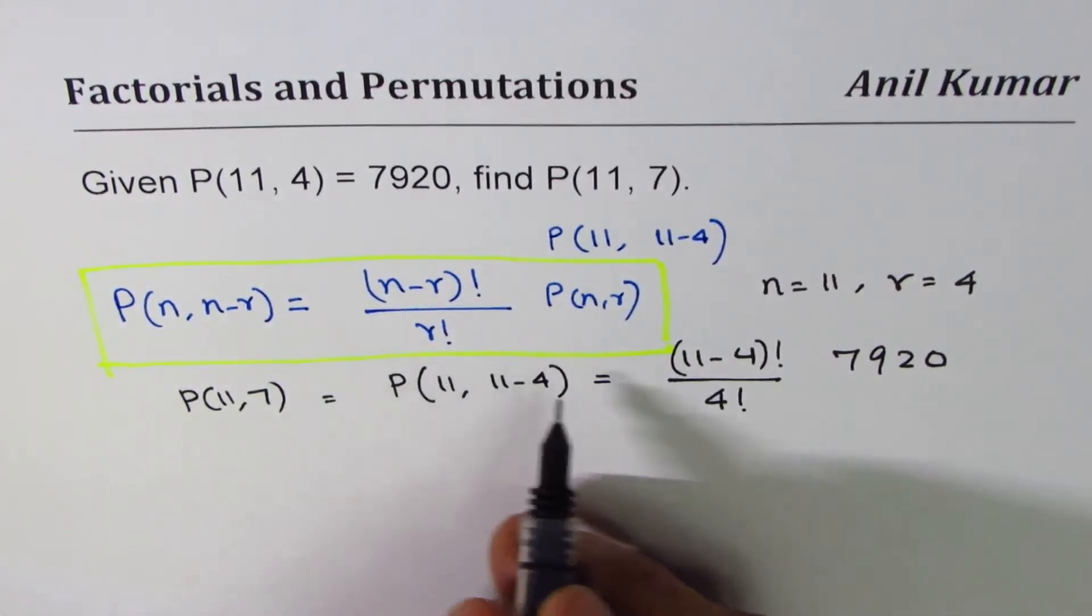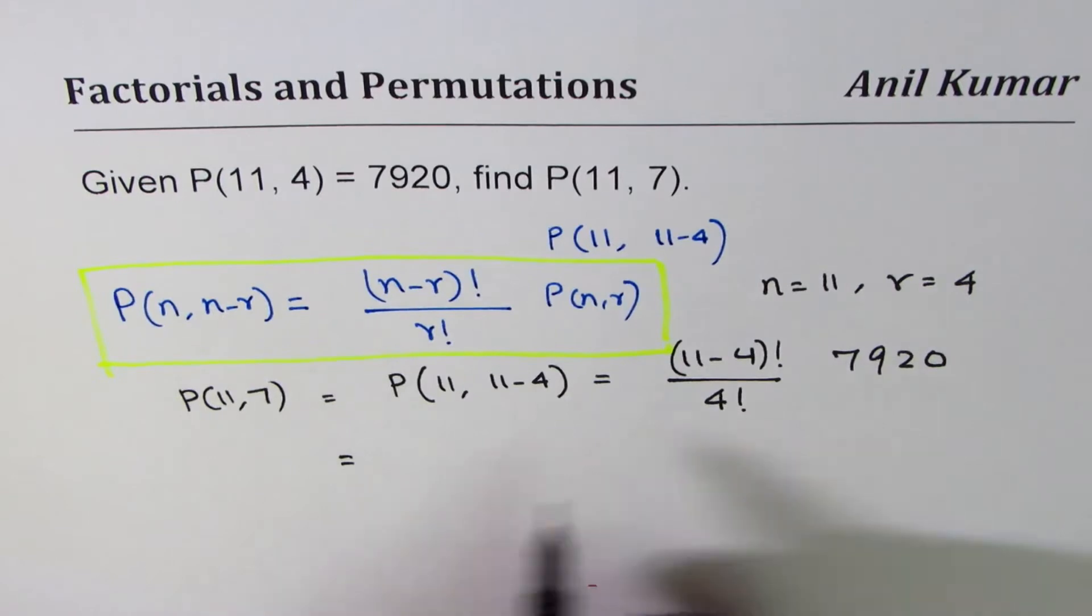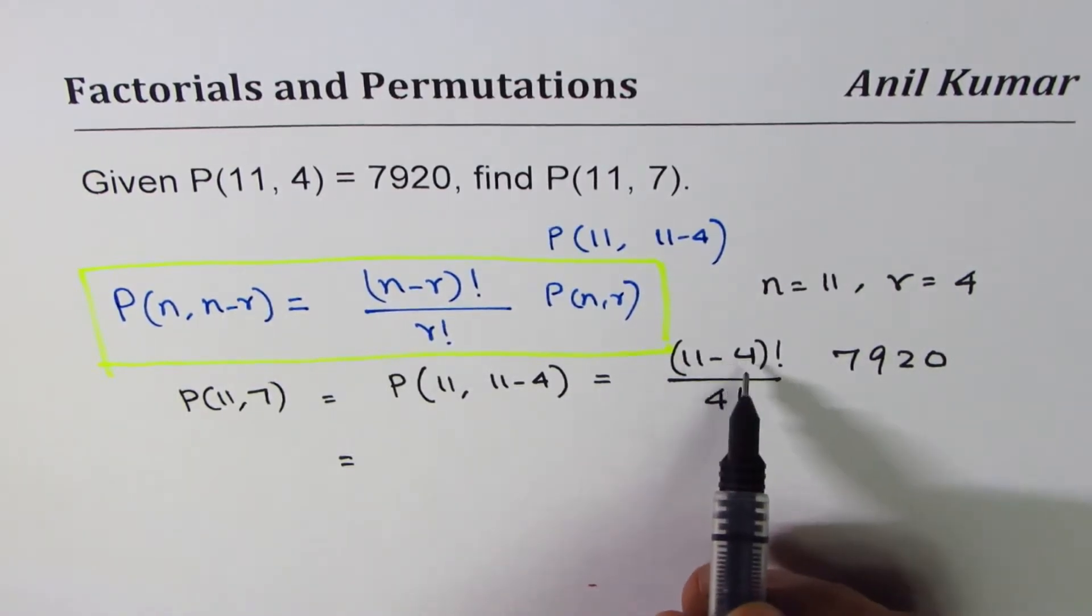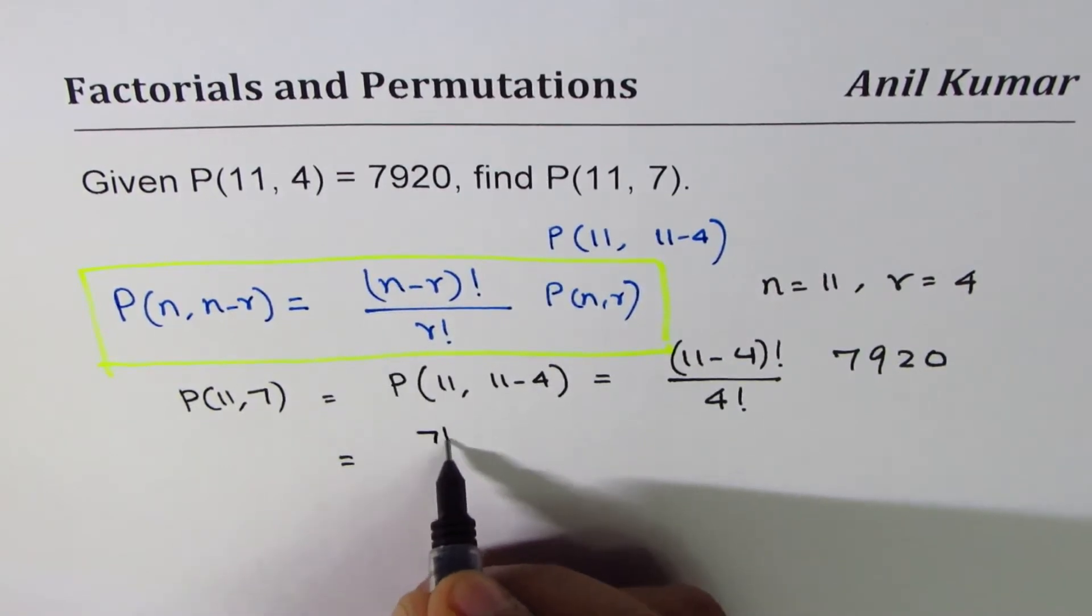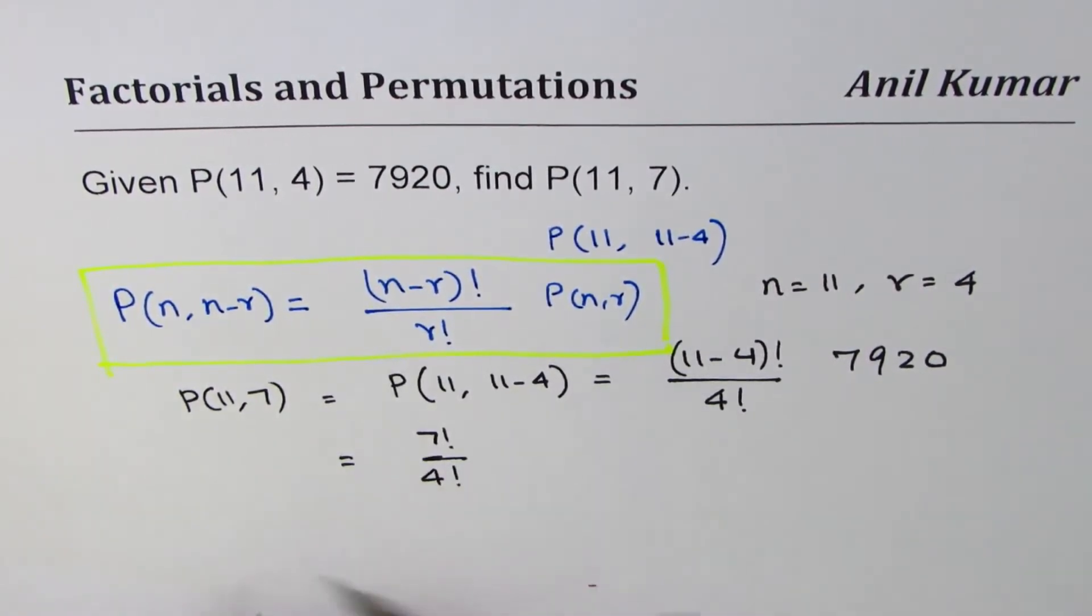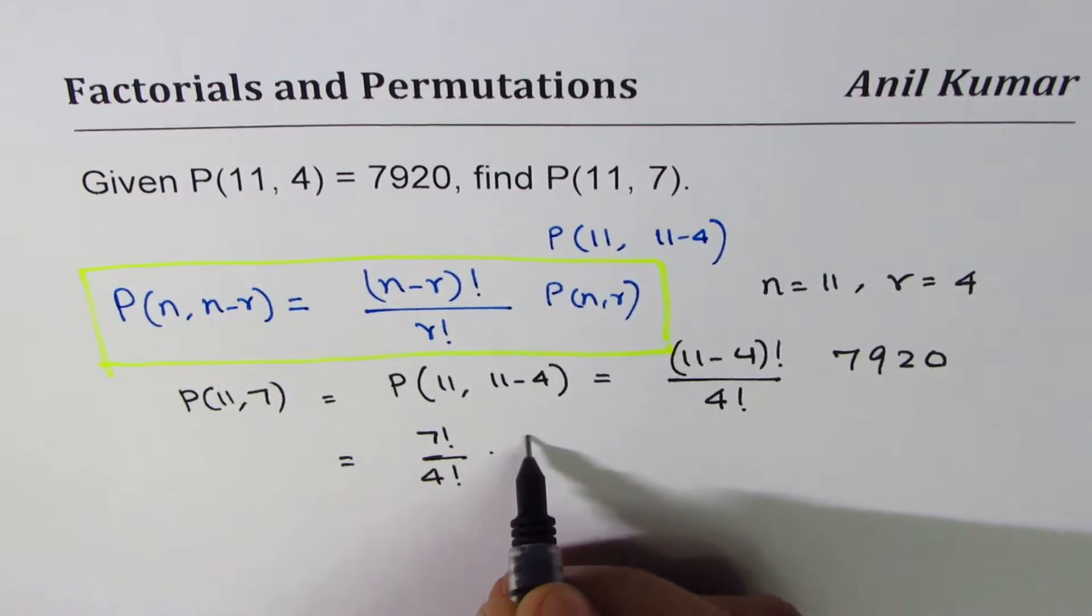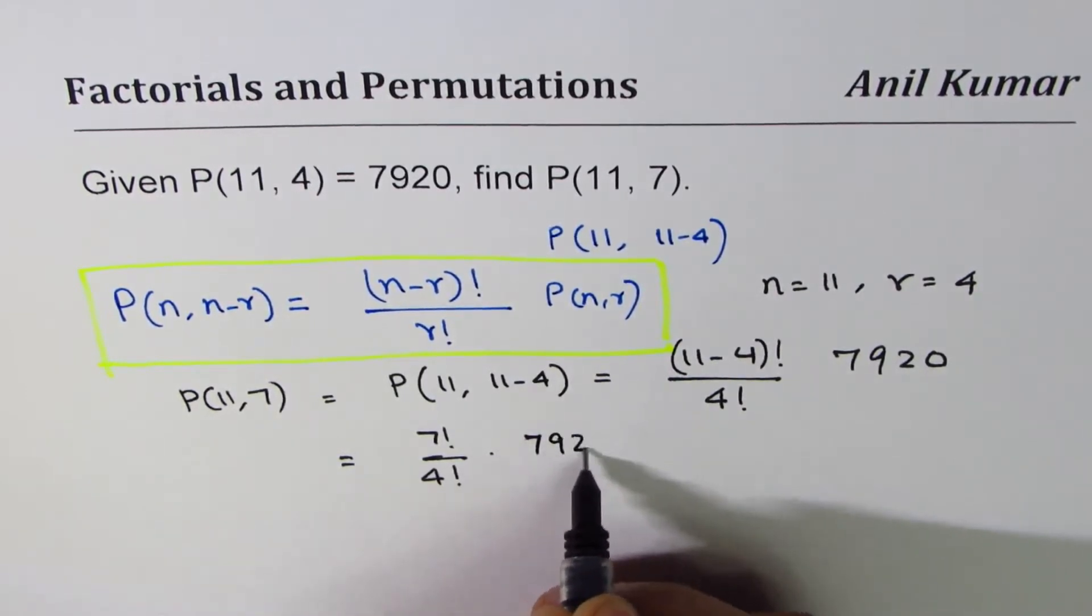So let me rewrite this. 11 minus 4 is 7, correct. So it is 7! divided by 4! times 7920.